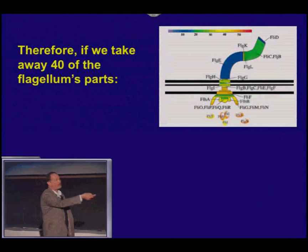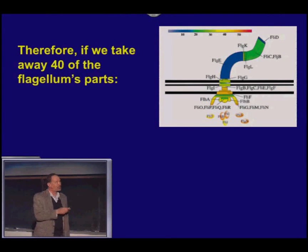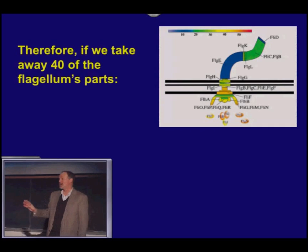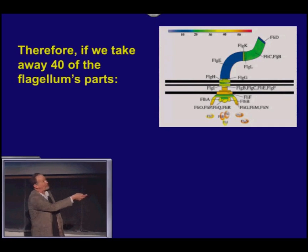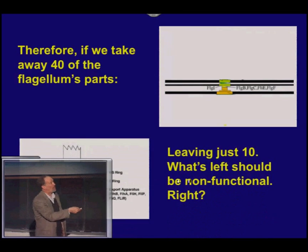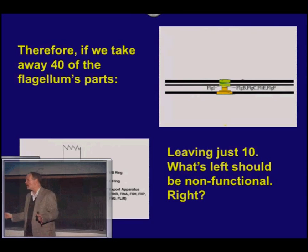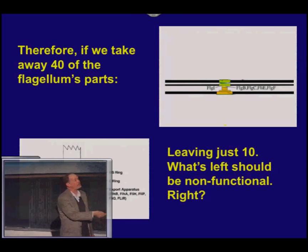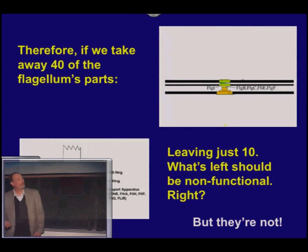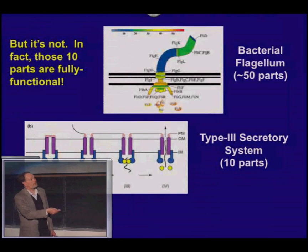Let's take that flagellum — here's a diagram showing where some of the proteins are located. Let's take away not one part, not ten, but 40 of the 50 proteins found in one particular kind of flagella. The 10 parts left are the ones that span one of the biological membranes. If the irreducible complexity argument is right, this little subset should be non-functional. But it turns out these parts are not non-functional. What are those 10 parts? They make up something called the Type 3 Secretory System.